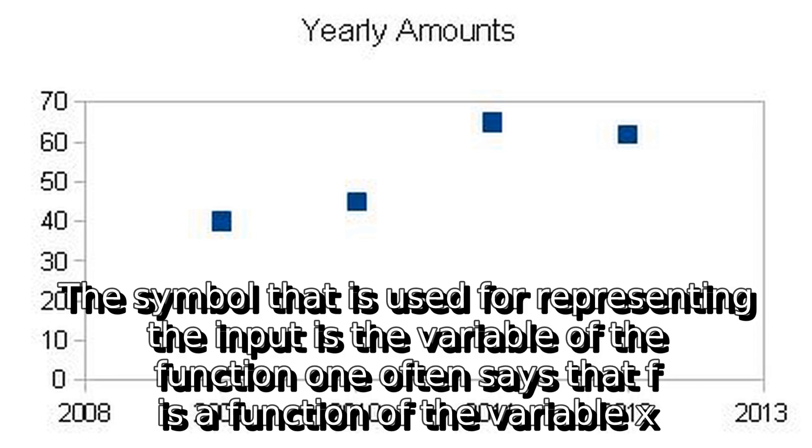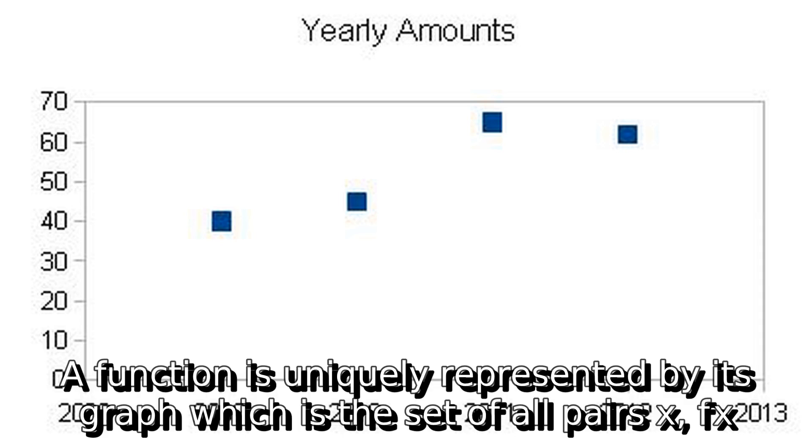The symbol that is used for representing the input is the variable of the function. One often says that f is a function of the variable x. A function is uniquely represented by its graph, which is the set of all pairs (x, f(x)).